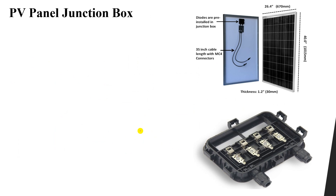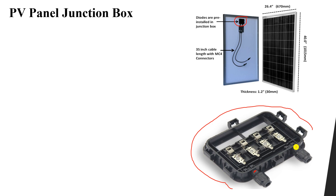Looking closely at the junction box, you can see two terminals — a positive terminal and a negative terminal. Inside the junction box you will also see diodes: this diode, this one, and this one — all three are diodes connecting between bus bars one, two, three, and four.